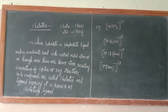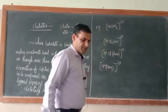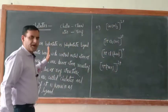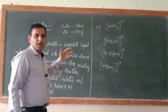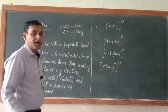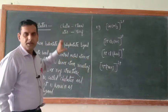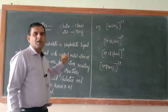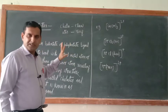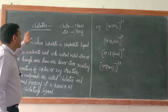Good morning dear cadets. As you know we are in the coordination compound chapter. In the last video I taught you different types of ligands — neutral ligands, negatively charged ligands, positively charged ligands — with their structure, charge, and oxidation number. Now let us move to the next topic of this unit.